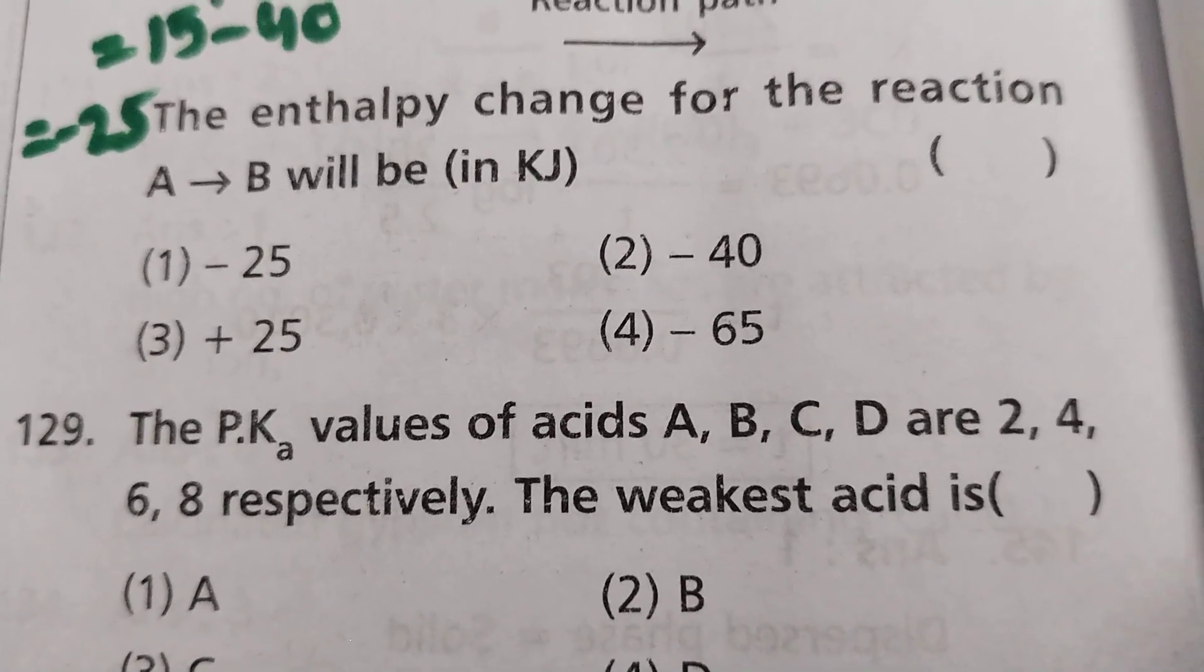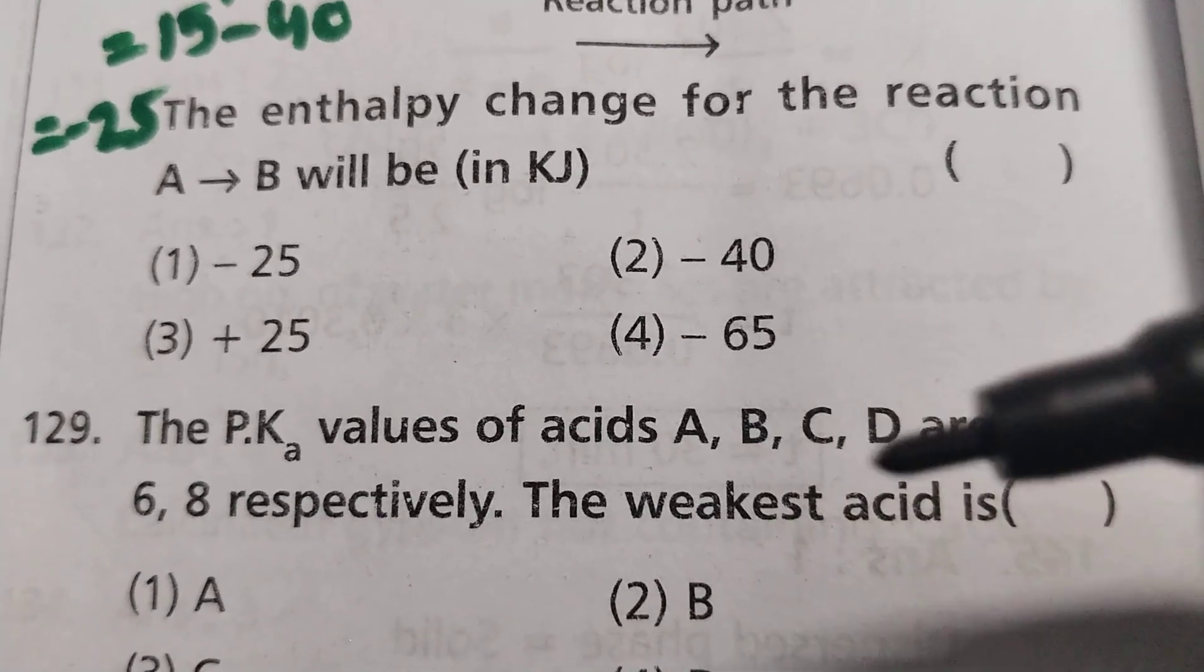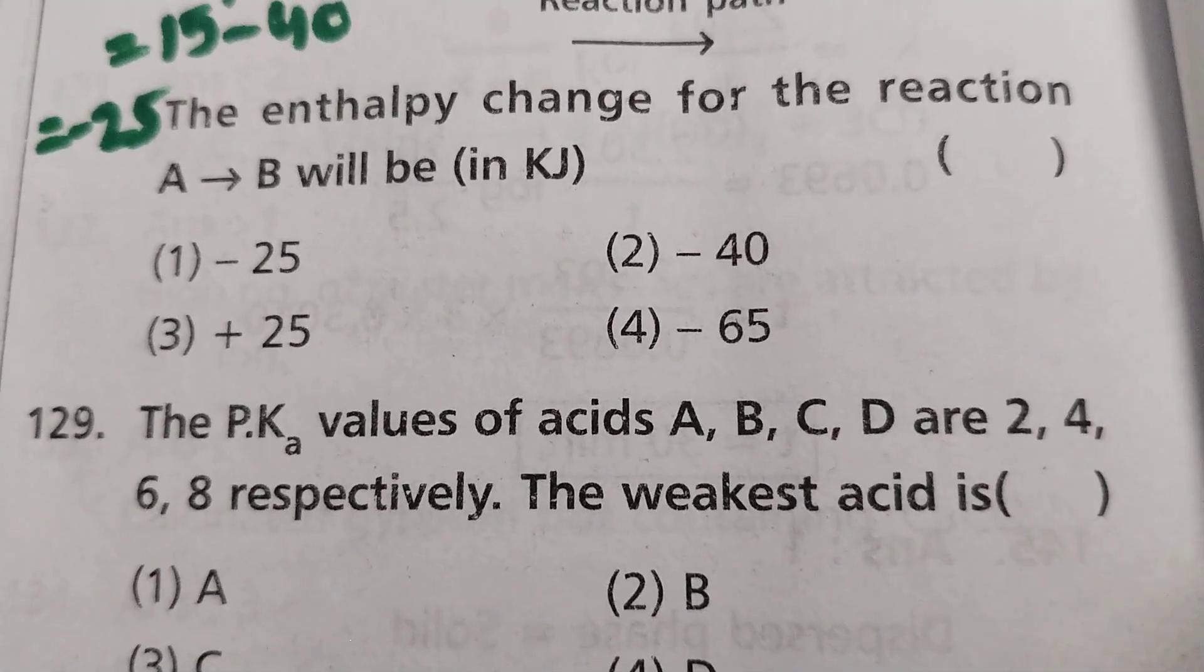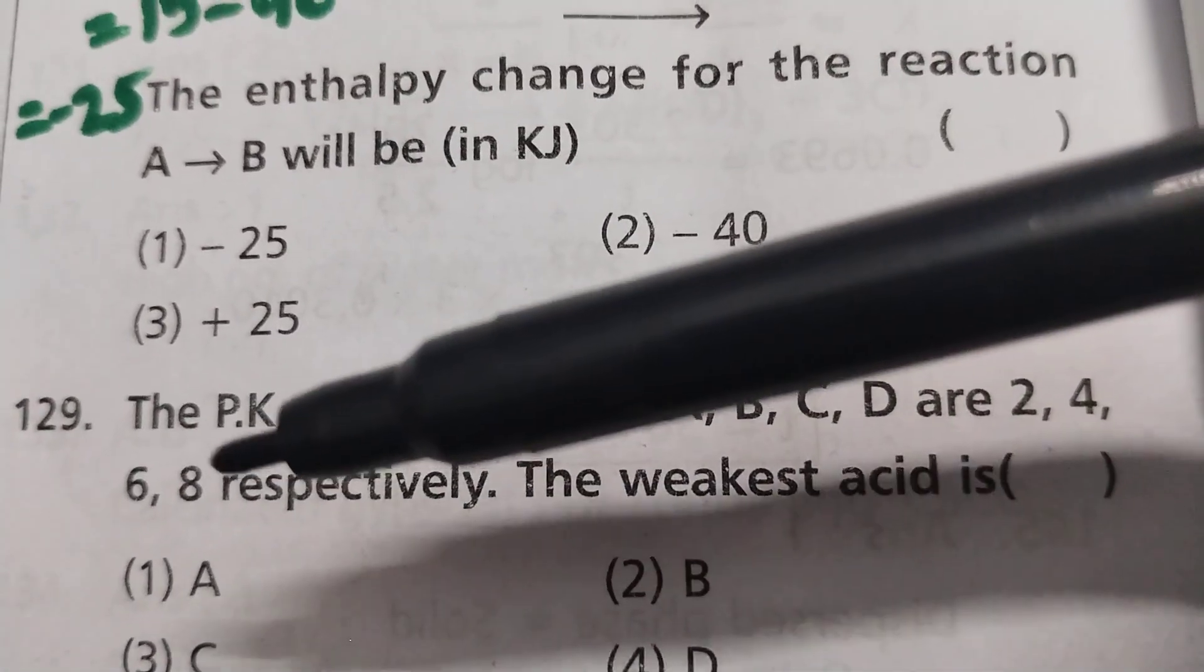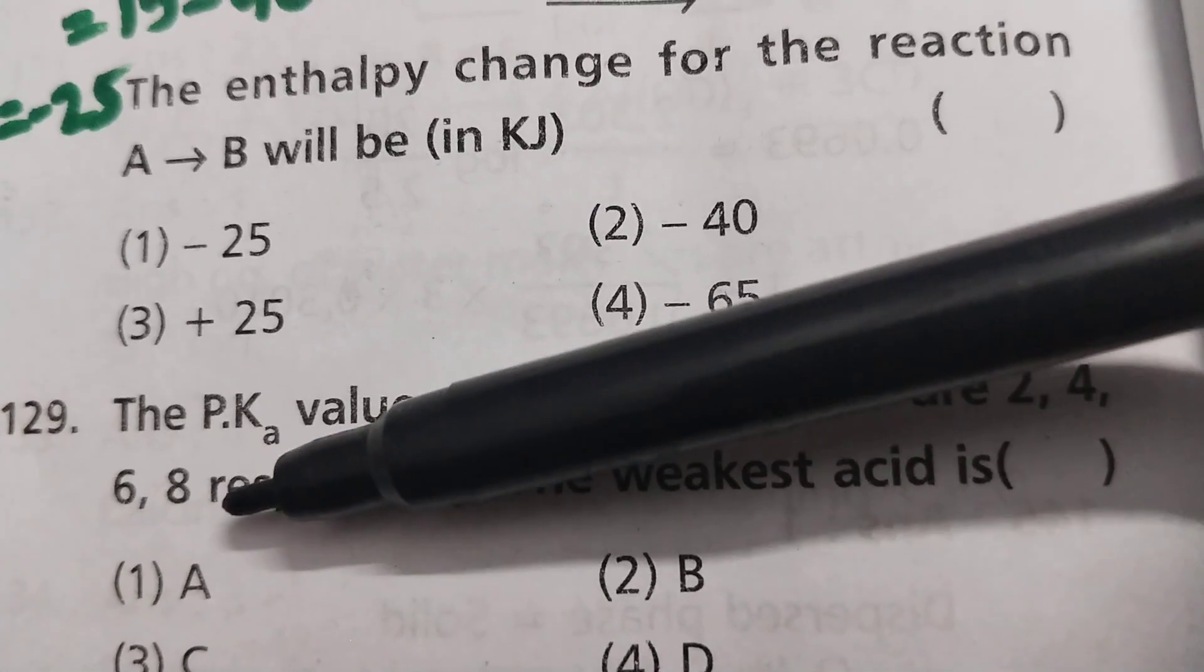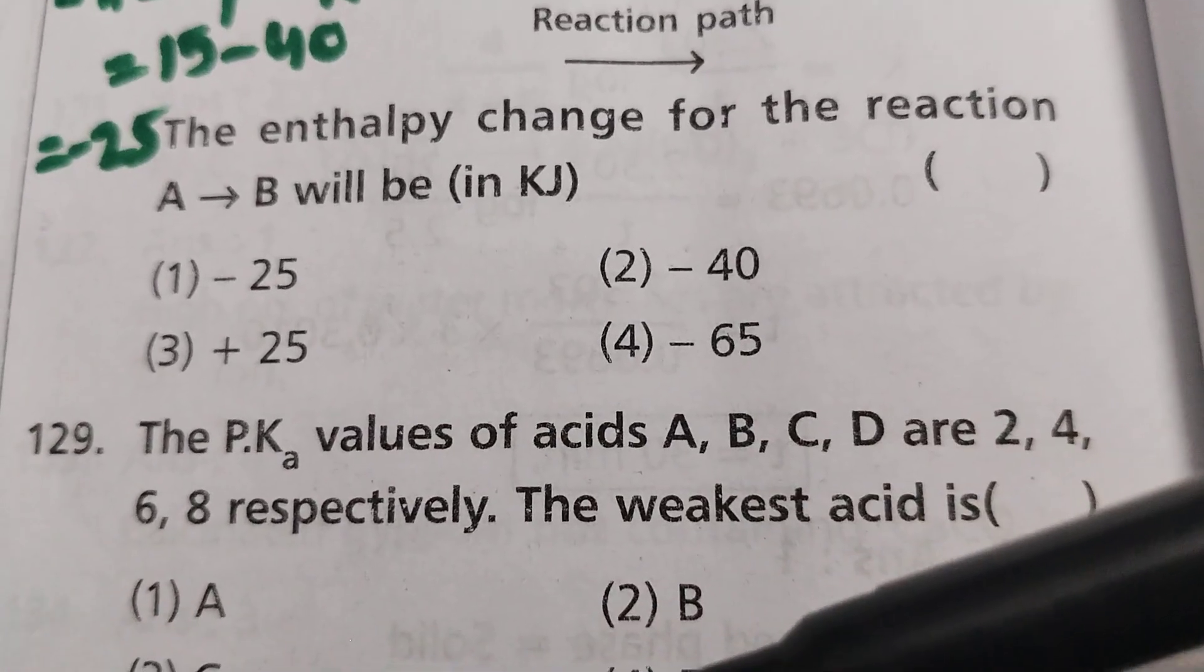If you know the pK values - A, B, C, D have 2, 4, 6, 8 - the higher the pK value, the greater the pK value, the lesser the acidic tendency.